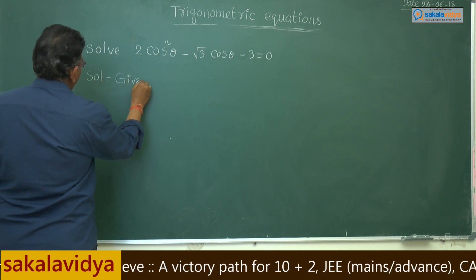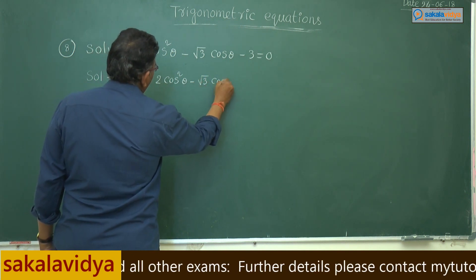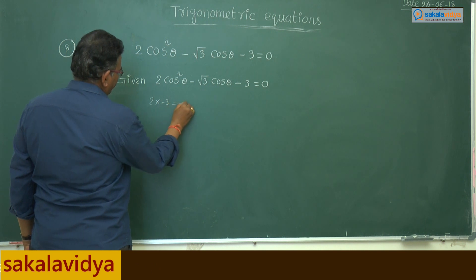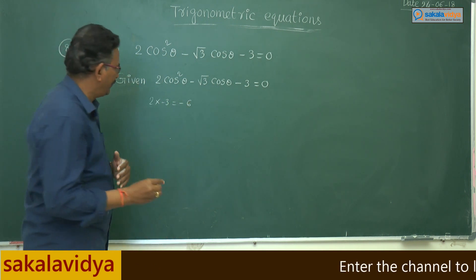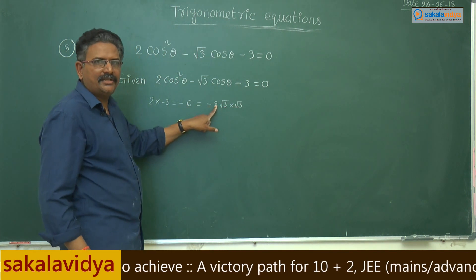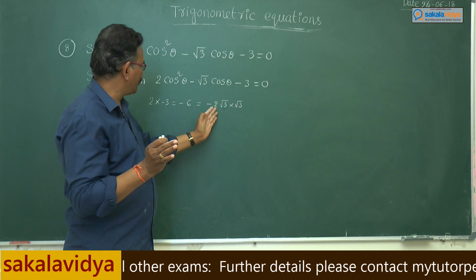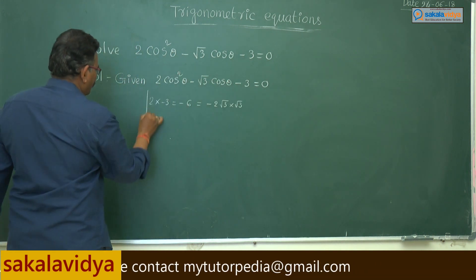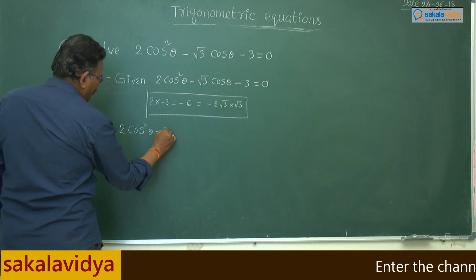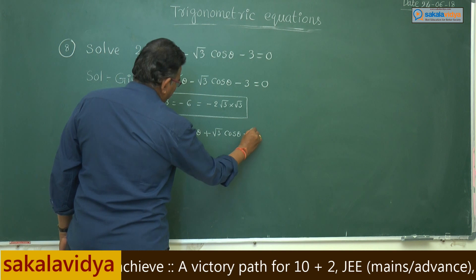Given: 2cos²θ - √3cosθ - 3 = 0. We compute 2 × (-3) = -6. We express -6 in terms of √3 as -2√3 × √3, since √3 × √3 = 3 and 3 × (-2) = -6. So the middle term can be split as -2√3cosθ + √3cosθ. This gives us 2cos²θ - 2√3cosθ + √3cosθ - 3 = 0.